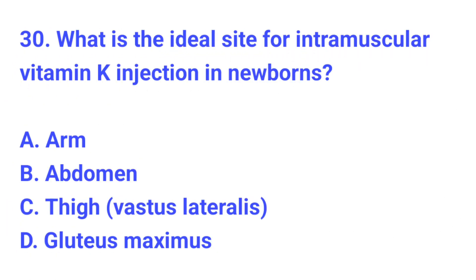Question number 30. What is the ideal site for intramuscular vitamin K injection in newborns? The correct answer is C, thigh.